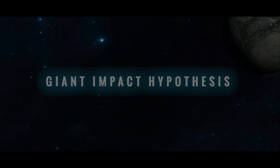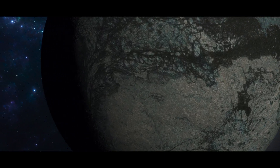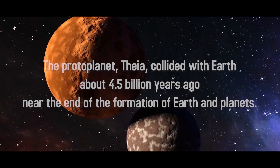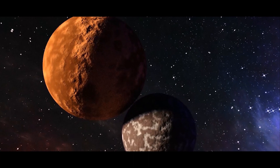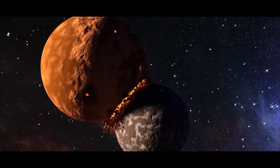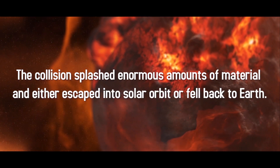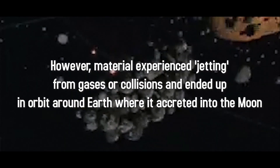The leading scenario for the moon's origin is that a Mars-sized early protoplanet called Theia collided with Earth about 4.5 billion years ago, at the end of the formation of Earth and the planets. The collision splashed enormous amounts of material out of Earth and the impactor. Most material escaped into solar orbit or fell back to Earth, but some experienced jetting from gases or collisions and ended up in orbit around Earth, where it accreted into the moon.